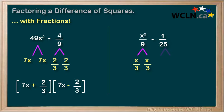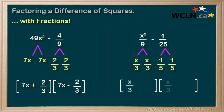1 over 25 is 1 over 5 times 1 over 5, so we can put that down here. We now can set up our square brackets. We know that x over 3 goes in the front of each bracket, and 1 over 5 goes in the back of each bracket. We make one bracket positive and one bracket negative, and we have factored this difference of squares with fractions.